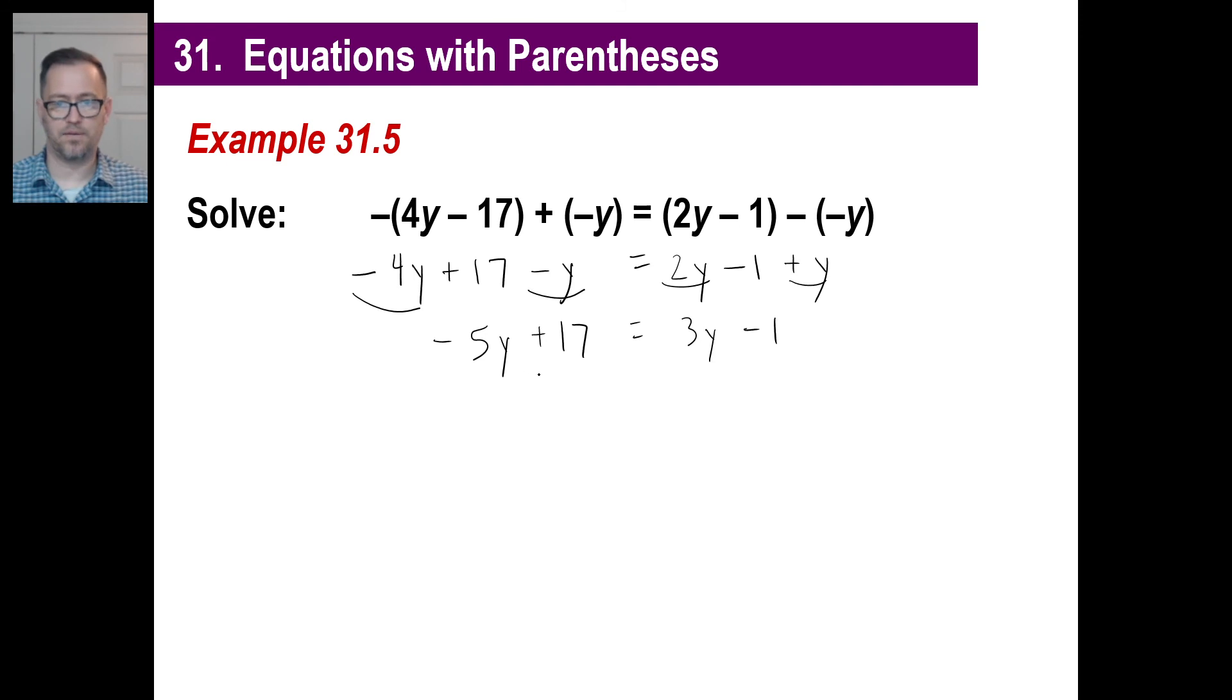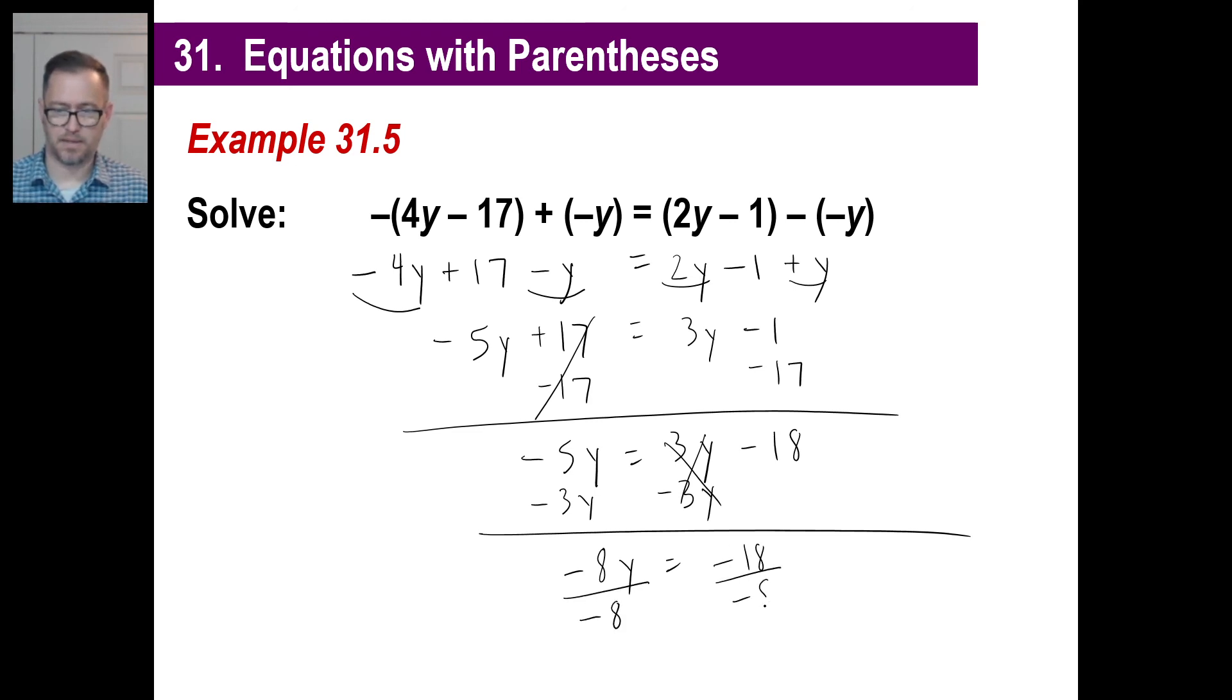Let's take a look at these and knock these like terms together. Negative four y minus y is negative five y plus seventeen. And a two y plus a y is a three y minus one. I'll subtract the seventeen first. Negative seventeen there. And then negative seventeen there. Negative five y is equal to three y minus one minus seventeen minus eighteen. Right side. I'm going to take care of that three y by subtracting it. Negative five y minus three y is negative eight y. And I have negative eighteen. And I'll just go ahead and divide each side by negative eight. And I get y is equal to, well, a negative divided by a negative is a positive. So that will be eighteen over eight. And, of course, since those two are divisible by two, we'll go ahead and put, that's going to be a nine over a four.